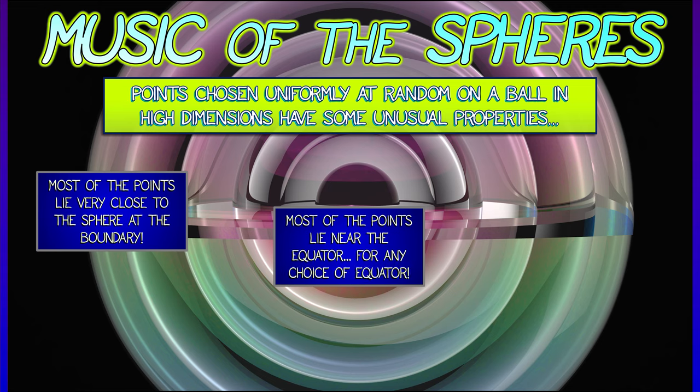Most of the points also lie near the equator. Take the big equator around the middle of the ball and look at a small neighborhood of that — that is where most of the probability density lies. So if you pick a point in the ball, not only does it lie on the boundary, but it lies very close to the equator. And since the ball is symmetric, this is true for any equator. Pick your favorite equator and this holds.